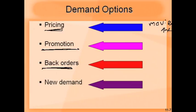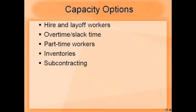The fourth proactive option is creating new demand, especially for situations where demand is seasonal. For example, air conditioners are needed more in summer and much less in winter. Sometimes companies try to create new demand for products and services in the period where demand is very low.